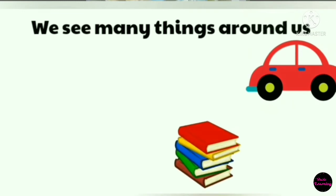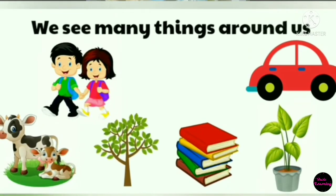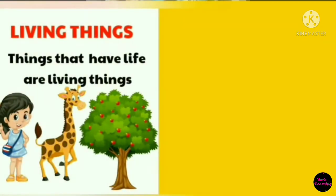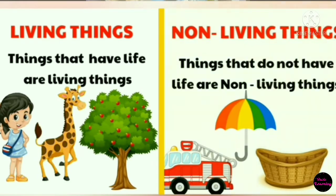Living things and non-living things. We see many things around us, and some things are living things while some are non-living things. Things that have life are living things, like human beings, animals, and plants. Things that do not have life are non-living things, like umbrella, basket, and many more.